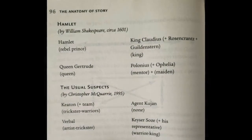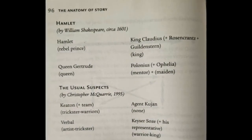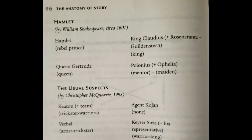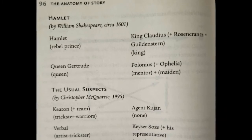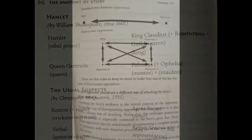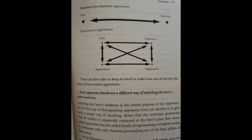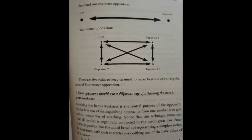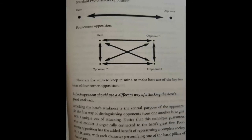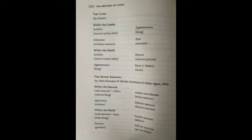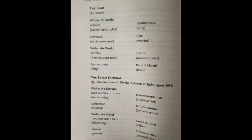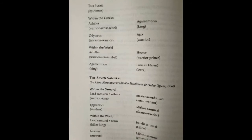Next is Four-Corner Opposition, a technique defined by John Truby in The Anatomy of Story for building conflict. The protagonist is pitted against the antagonist and secondary opponents. An example from Hamlet: Hamlet is the hero, Claudius is the main opponent, and Gertrude and Polonius are secondary opponents. Each opponent should use a different way of attacking the hero's greatest weakness. Truby says to place all characters in conflict with each other, put the values of all four characters in conflict, and push the characters to the corners — making each as different as possible. Examples include the Iliad, Seven Samurai, A New Hope, and Batman Begins.